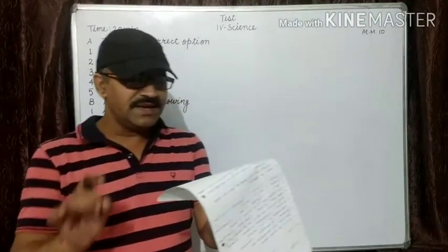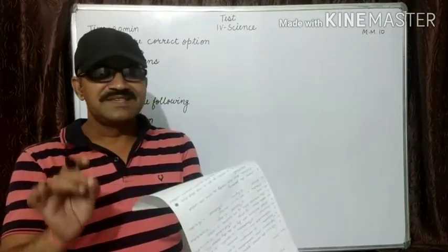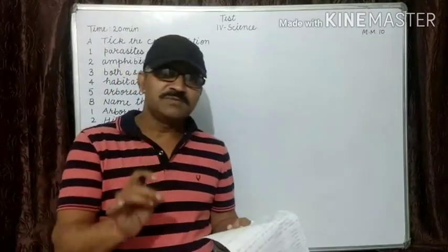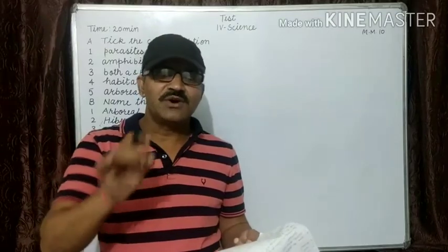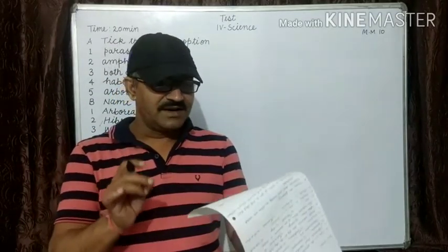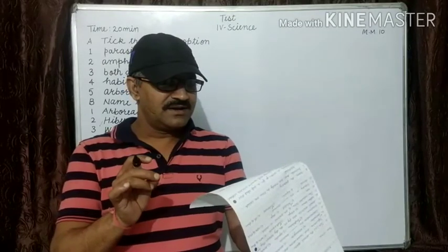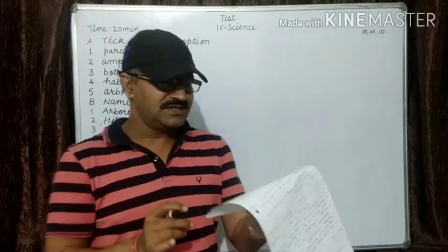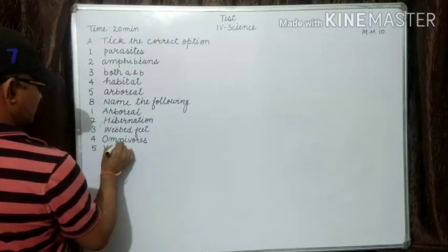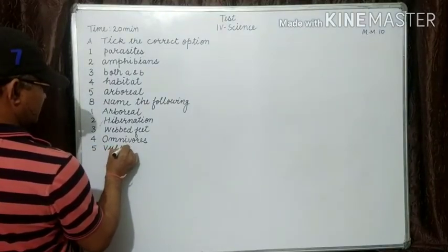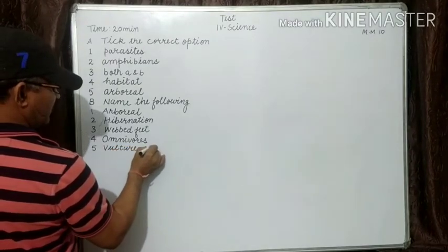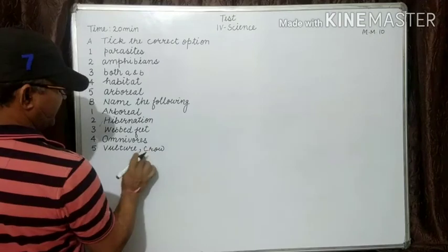Fifth: give an example of scavengers. Do you know scavengers? The animals which eat flesh of dead animals are called scavengers. Examples of scavengers: vulture, crow. You write only one.